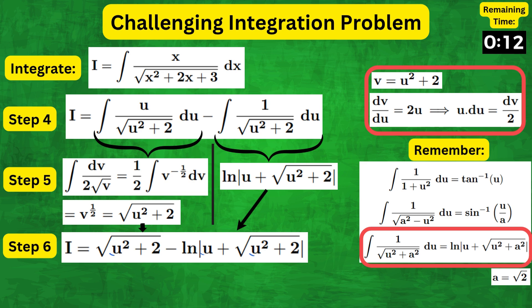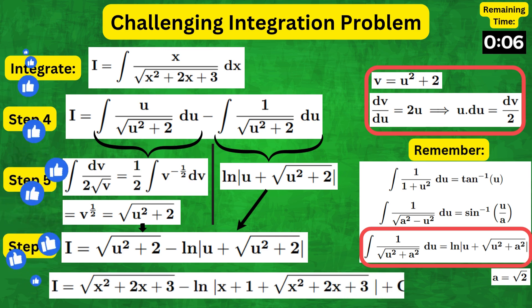Finally, replacing u with x plus 1, we get the answer square root of x squared plus 2x plus 3 minus natural log of modulus of x plus 1 plus square root of x squared plus 2x plus 3 plus C.